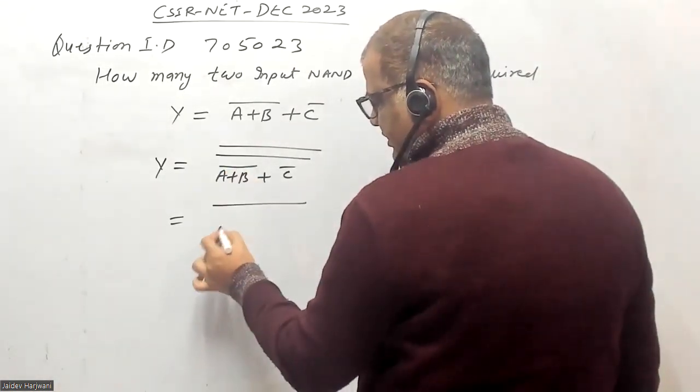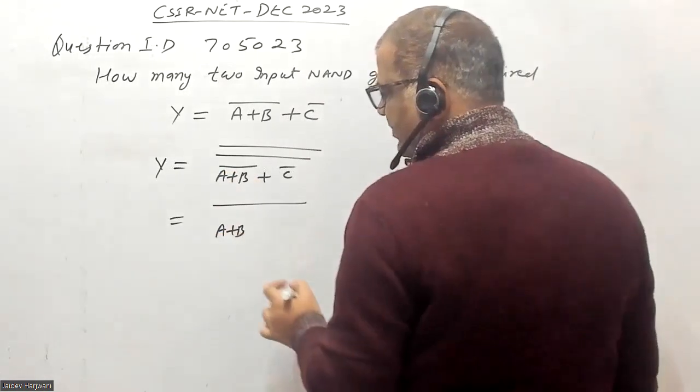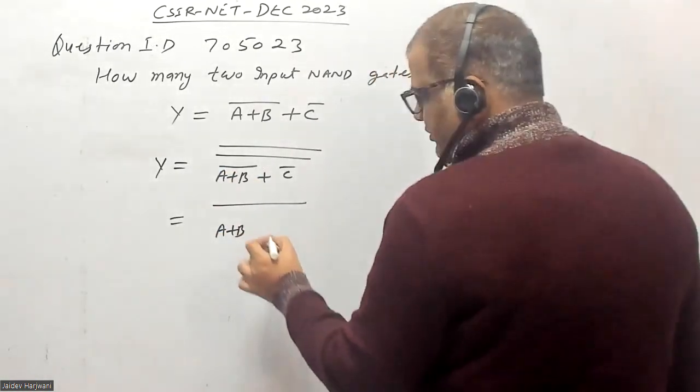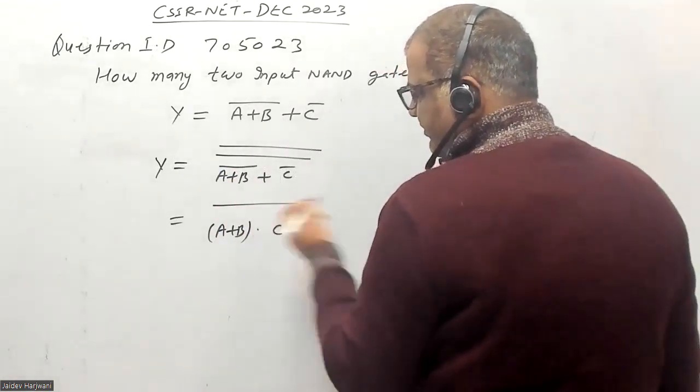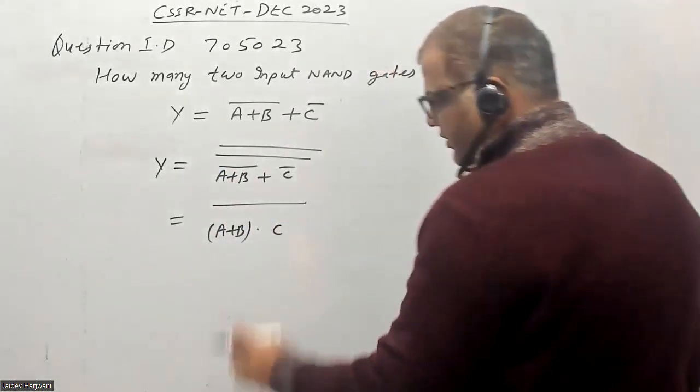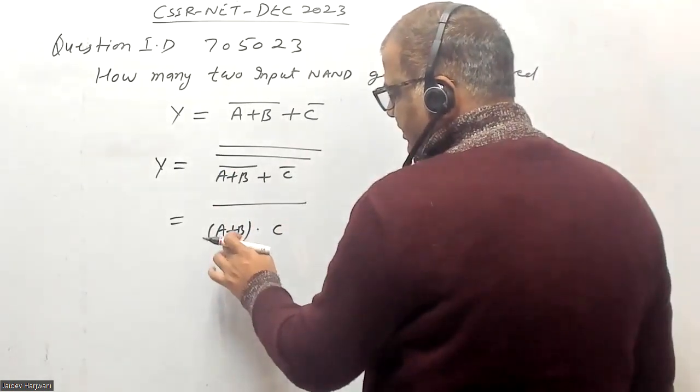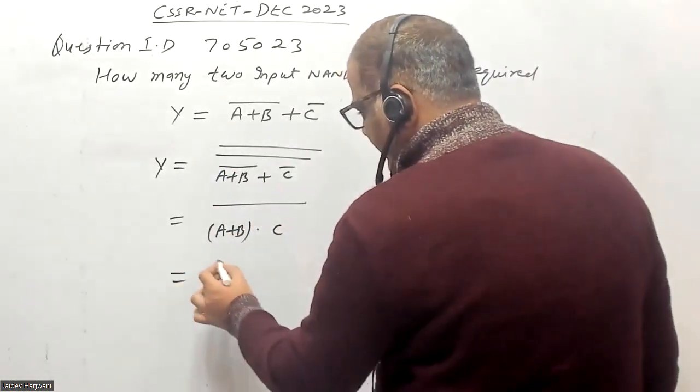So now this will be, plus will be dot, and you have C C bar because it again becomes C. Now again you want to convert this also in the form of NAND gate output.